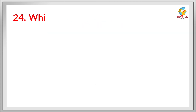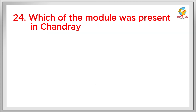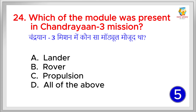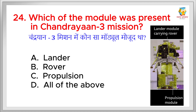Which modules were present in the Chandrayaan 3 mission? Chandrayaan 3 mission mein koun sa module maujood tha? The right answer is All of the above — it had lander, rover, and propulsion module.